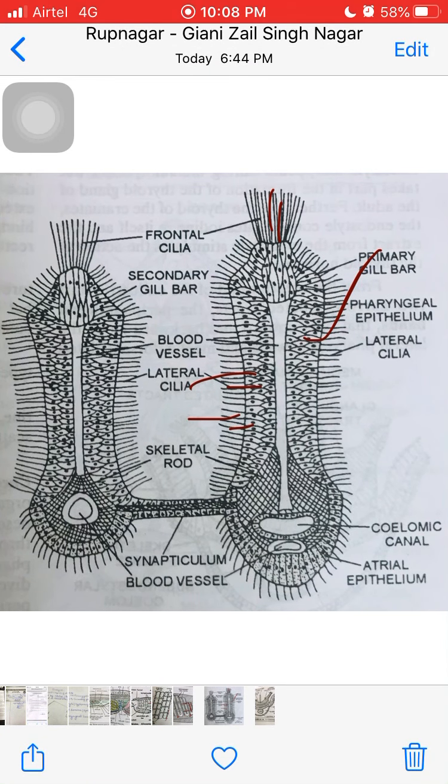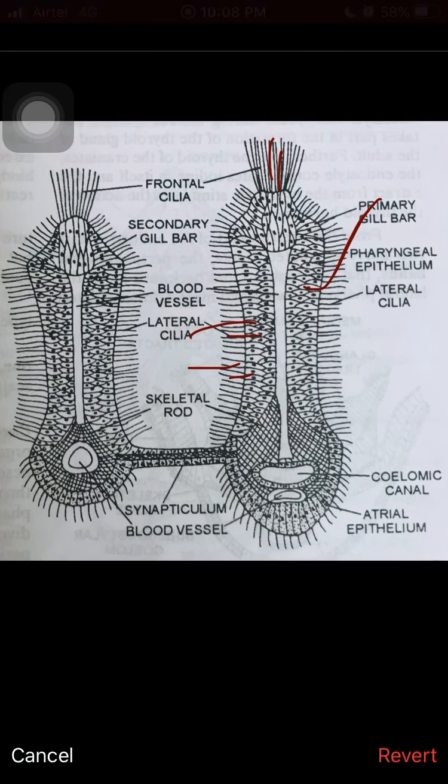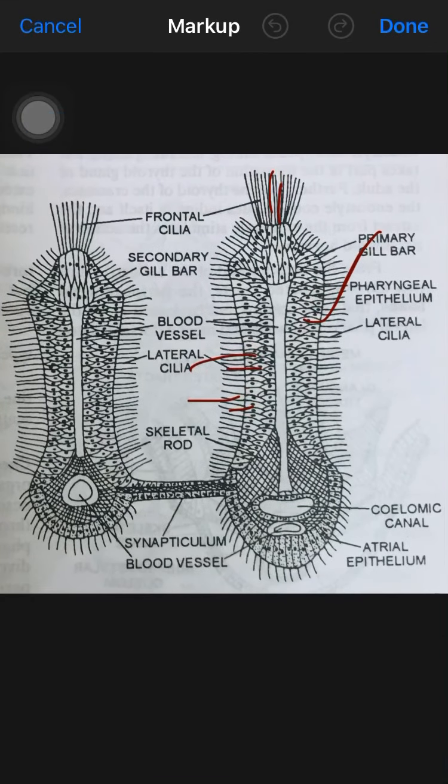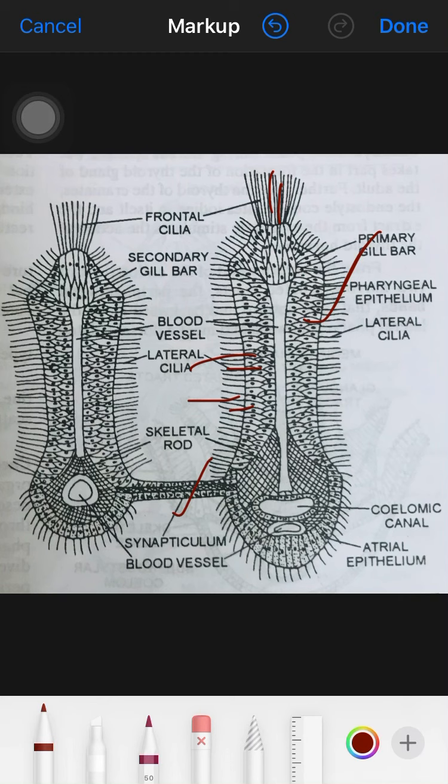The primary and secondary gill bars are alternately arranged. Their gill rods are interconnected by a structure called synapticulae. The primary has coelomic canal and blood vessels, the secondary has only blood vessels, there is no coelomic canal because of how it develops. The gill rods are interconnected on the ventral side, and this gives a basket-like appearance.